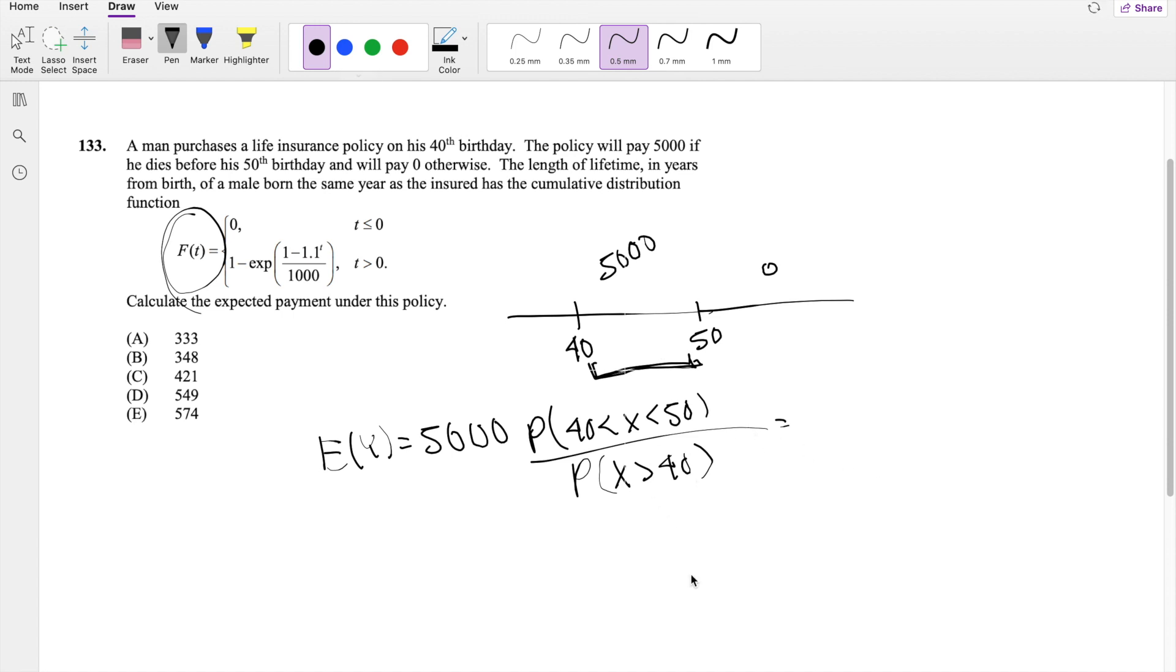We know that the probability that x is greater than 40 is the same thing as 1 minus the CDF of F40. So that's going to be 1 minus F40.